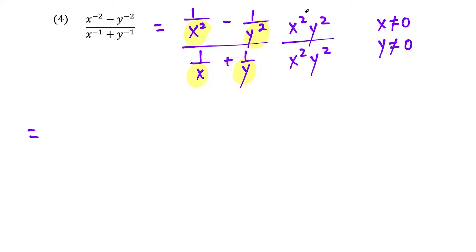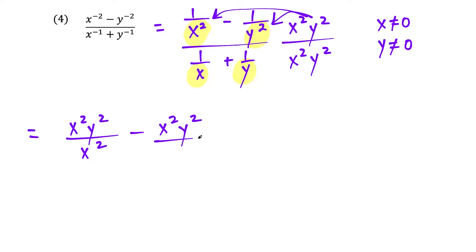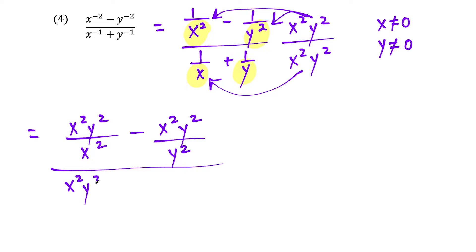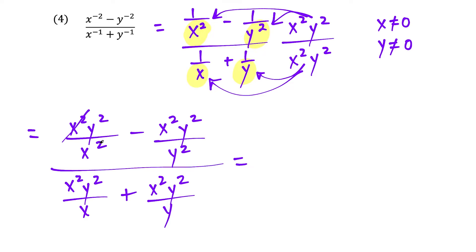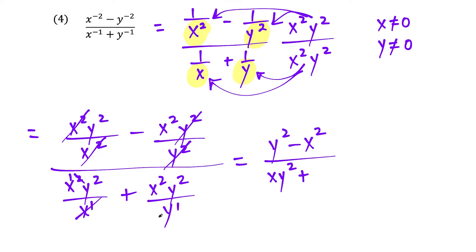Multiplying out: x squared y squared times one over x squared gives y squared; x squared y squared times one over y squared gives x squared. On the bottom, x squared y squared times one over x gives x y squared, and x squared y squared times one over y gives x squared y. So the top simplifies to y squared minus x squared, and the bottom is x y squared plus x squared y.